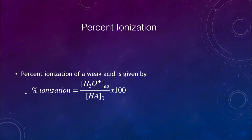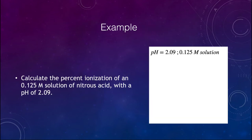Let's go ahead and do an example. What we want to do is calculate the percent ionization of a 0.125 molar solution of nitrous acid, and it has a pH of 2.09.